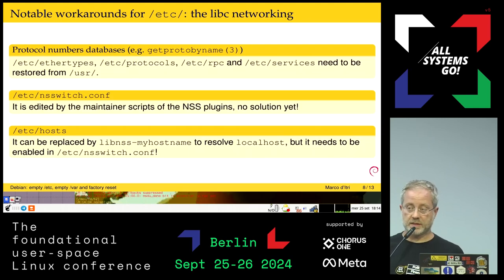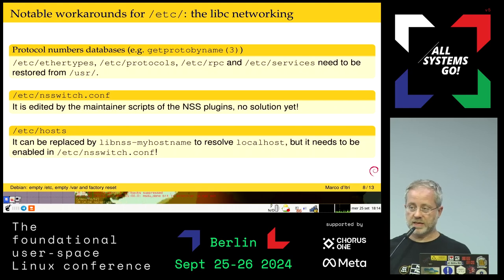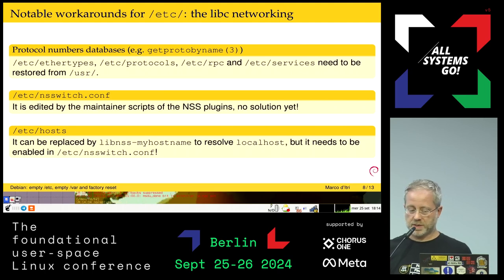Then we have the protocol number databases used by libc functions like getprotobyname and so on. I'm actually the Debian maintainer of the package providing these files. I don't really have a good solution except copying or symlinking them on first boot. NSS switch is the same thing, but it cannot even be regenerated currently — it defines which NSS plugins are used to resolve names. It has to be copied as well. For /etc/hosts, we need localhost defined, but we can do without it.